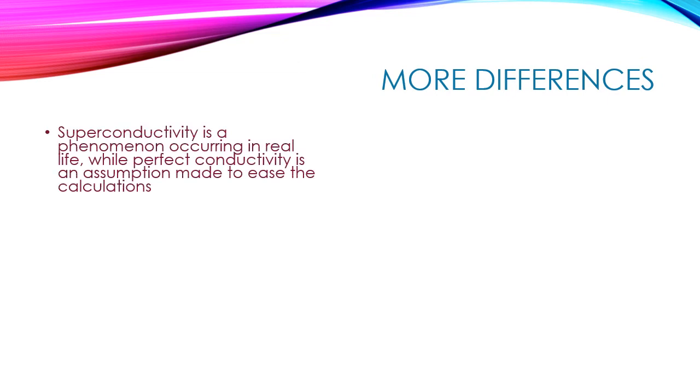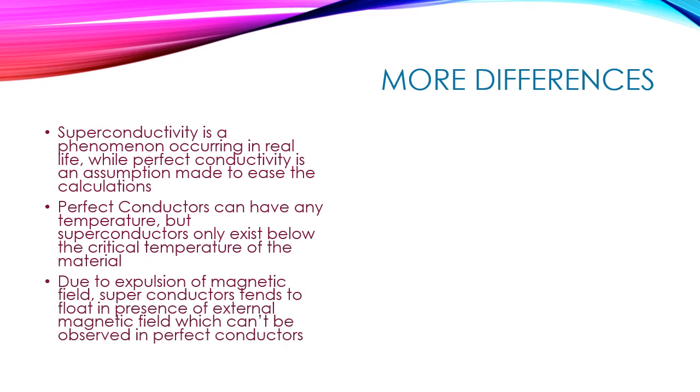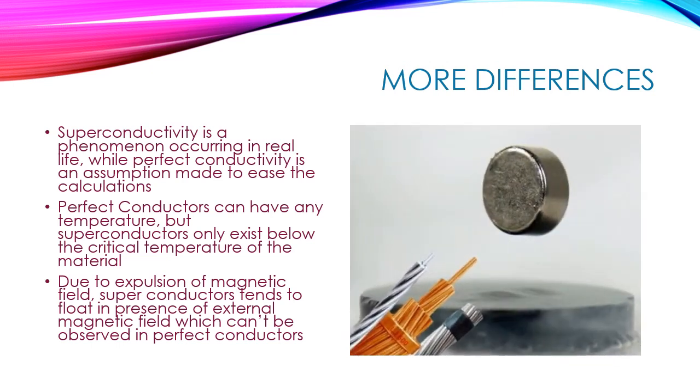Let us finish this video with a few more differences. Superconductivity is a phenomenon occurring in real life, while perfect conductivity is an assumption made to ease the calculations. Perfect conductors can have any temperature but superconductors only exist below the critical temperature of the material. Due to expulsion of magnetic field, superconductors tend to float in presence of external magnetic field which can't be observed in perfect conductors.